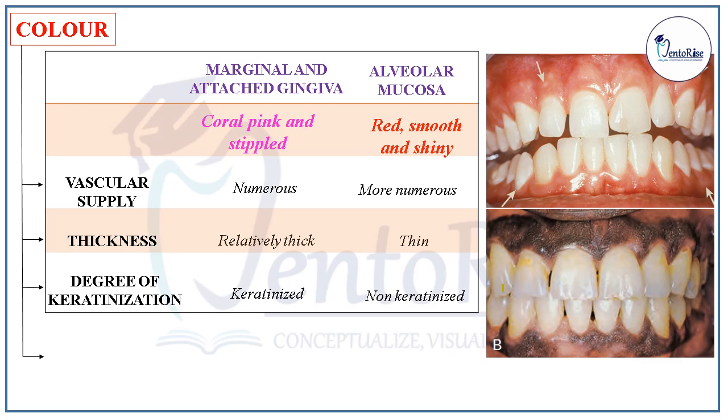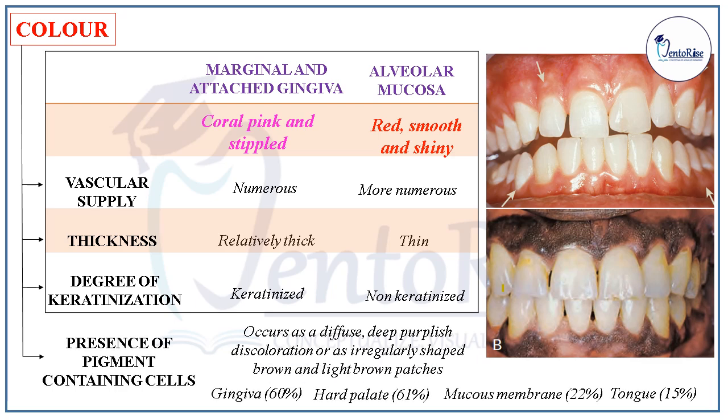Often there is presence of pigment-containing cells within the gingiva, which occurs as a diffuse deep purplish discoloration or even as irregularly shaped brown and light brown patches, as you can see in the figure.